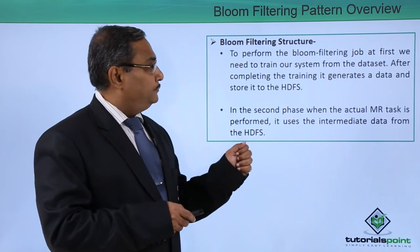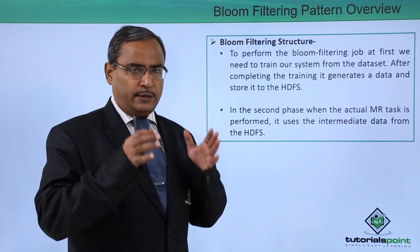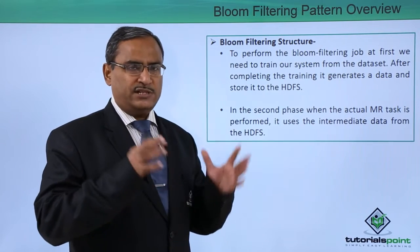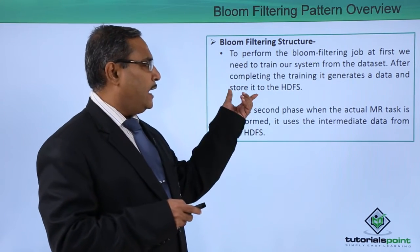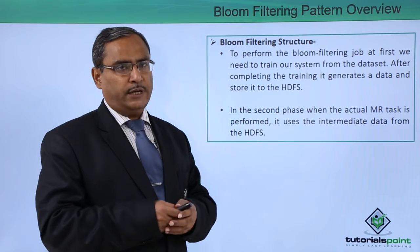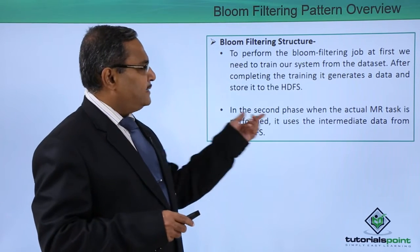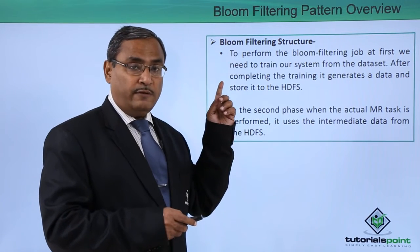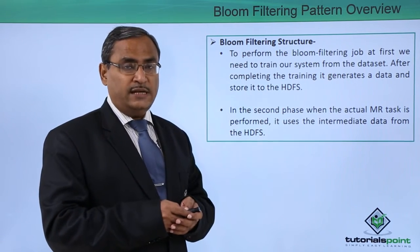Bloom filtering structure. To perform the bloom filtering job, at first we need to train our system from the dataset. When the training is done, we require a huge number of data sets so that the model can be trained properly. After completing the training, it generates data which will be stored onto the HDFS. After completion of training, the model will generate some data and those data will be stored onto our HDFS. This is phase number one.